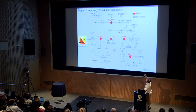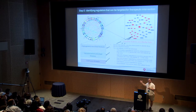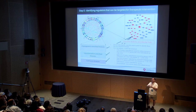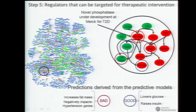We haven't gotten all the way from these regulators to treatments for Alzheimer's yet. But just to finish, here's a quick example of how we took that same network — which I showed was causal for Alzheimer's — applied it to diabetes, and came up with a novel treatment for obesity and diabetes. We had also shown in a Nature paper a few years ago that it was highly causal for atherosclerosis, diabetes, and obesity. So now we want to understand what genes in this network to target for therapeutic intervention.